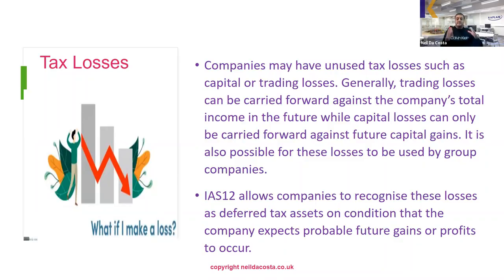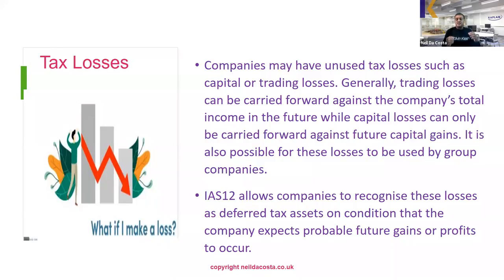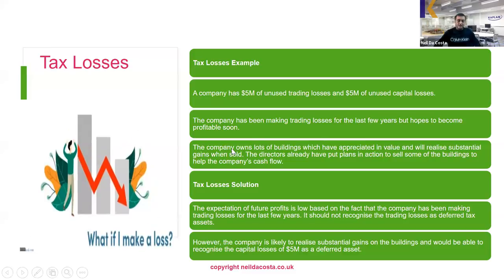It's also possible for these losses to be used by group companies — so within a group, trading losses and capital losses can be used by other group companies. IAS 12 tells us that companies can recognize these losses as deferred tax assets because they will save tax in the future, on condition that the company expects probable future gains or profits to occur. If you're expecting to make future profits or gains, you can recognize these deferred tax assets.